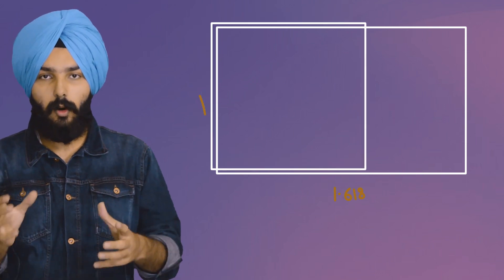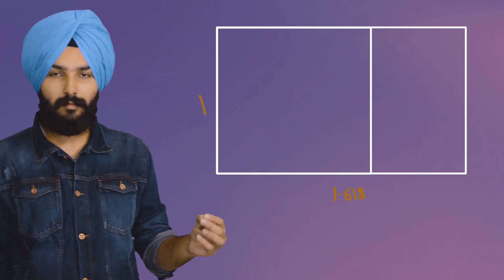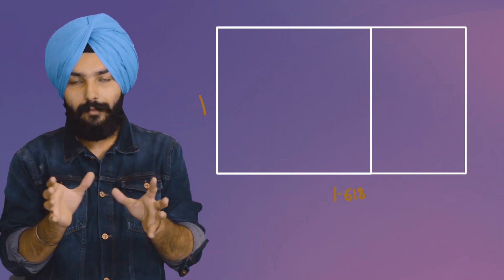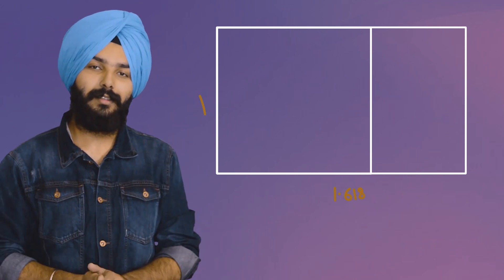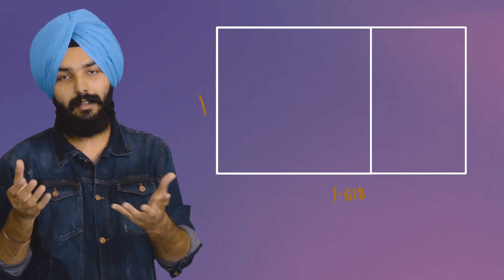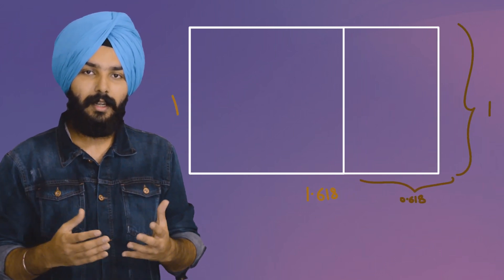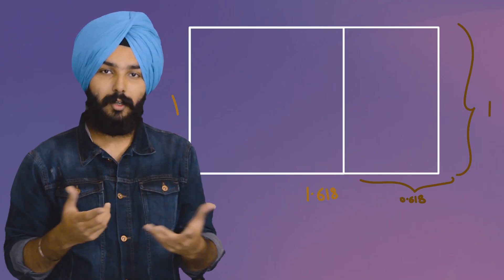Let's take our golden rectangle which has sides 1 and 1.618. Now take the square of the shorter side, which in this case is 1, and put this 1×1 square onto our golden rectangle. We now have our original square and a leftover area that forms a rectangle with sides 0.618 and 1.